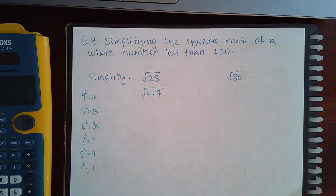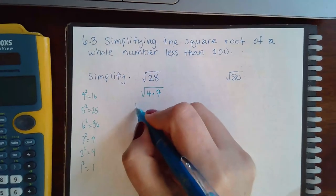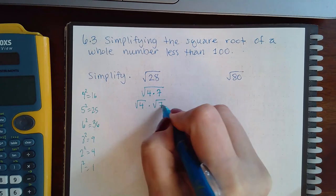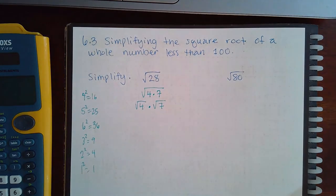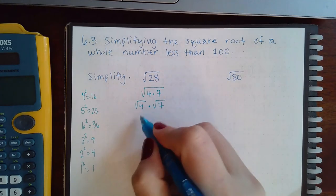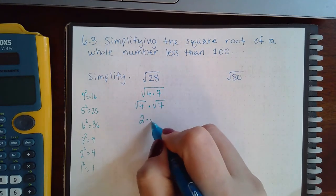Now that we have a product of two square roots, remember this splitting can only occur if both numbers are real numbers. The square root of 4 is 2, and I still have the square root of 7 which is not going to simplify.